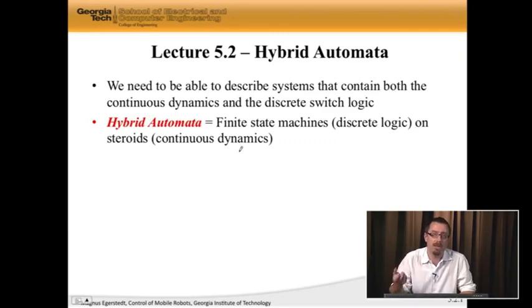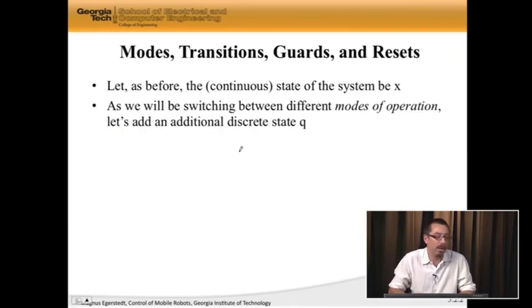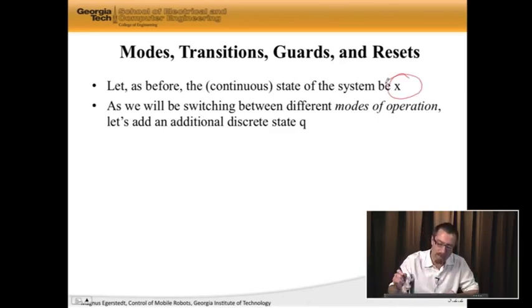This is a finite state machine on steroids, in the sense that inside each state, we have a continuous dynamics lurking. Having said that, what we need first of all is the notion of a state. So x, as before, is the continuous state of the system. This is the physical state, typically, of what a robot is doing.